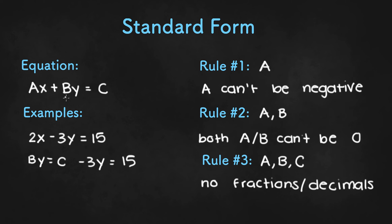Now if B was equal to 0, then this whole term would be 0 and we would have Ax plus 0 equals C or Ax equals C. And so something like 2x equals 15 would still be in standard form.